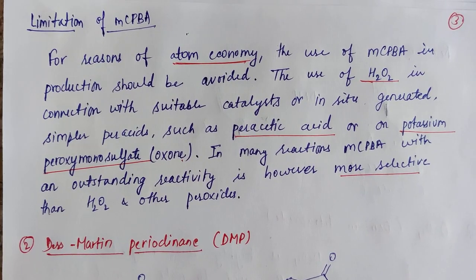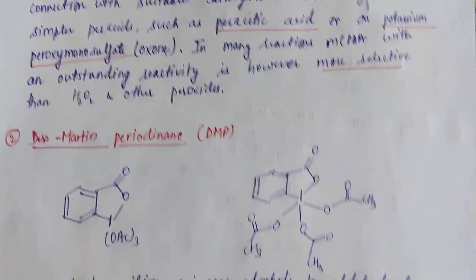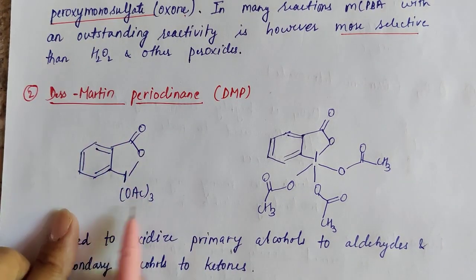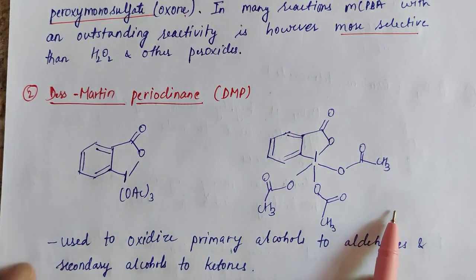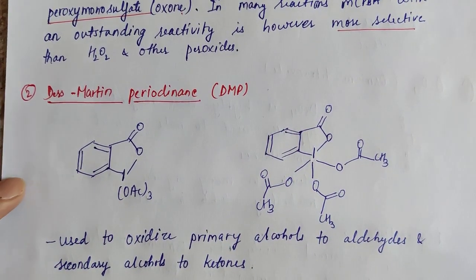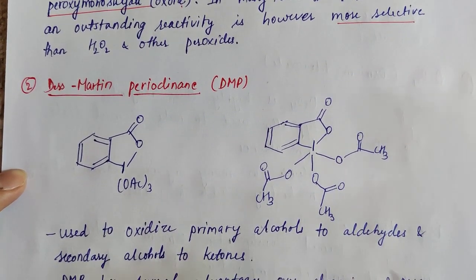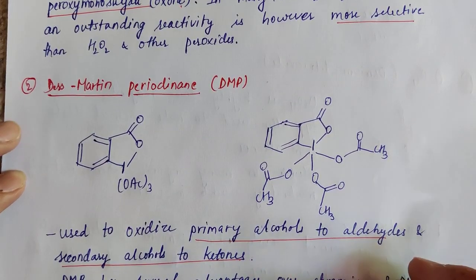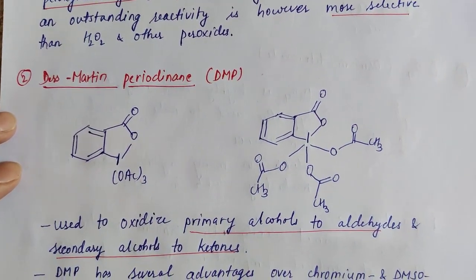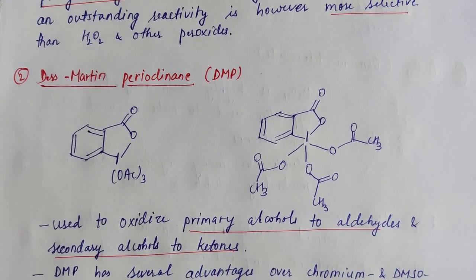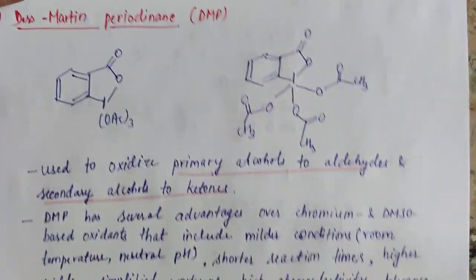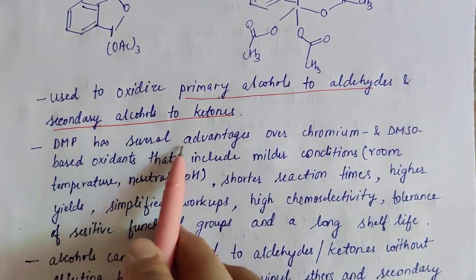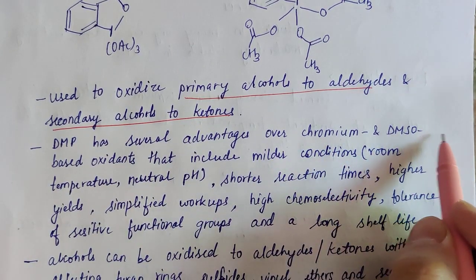The second oxidizing agent is Dess-Martin periodinane, or DMP. This is the simplified structure and this is the complete structure of DMP. The role of DMP is to convert primary alcohol to aldehyde and secondary alcohol to ketone. It's not very easy to convert primary alcohol to aldehyde and stop there — with many oxidizing agents the reaction goes up to carboxylic acid. This particular oxidizing agent stops at aldehyde and ketone.